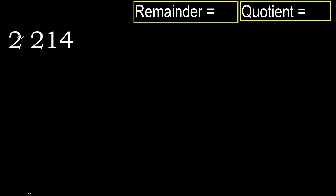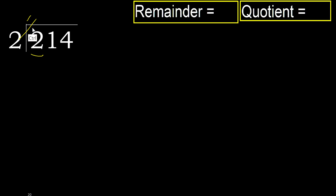214 divided by 2. 2 is not less, therefore work with 2. Here, 2 multiplied by which number is nearest to 2 but not greater? 2 multiplied by 2 is 4, which is greater. 2 multiplied by 1 is 2, which is not greater. Ok, subtract. Next.